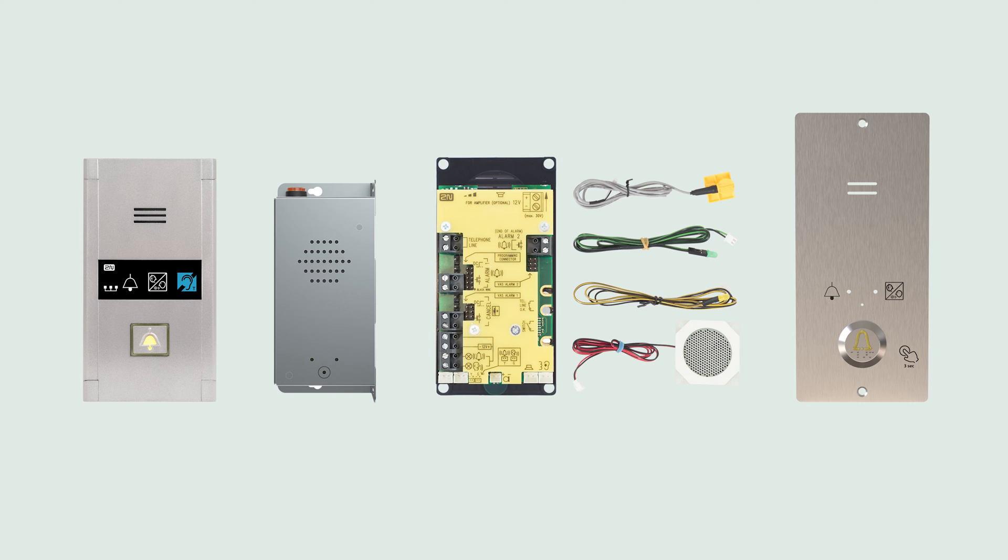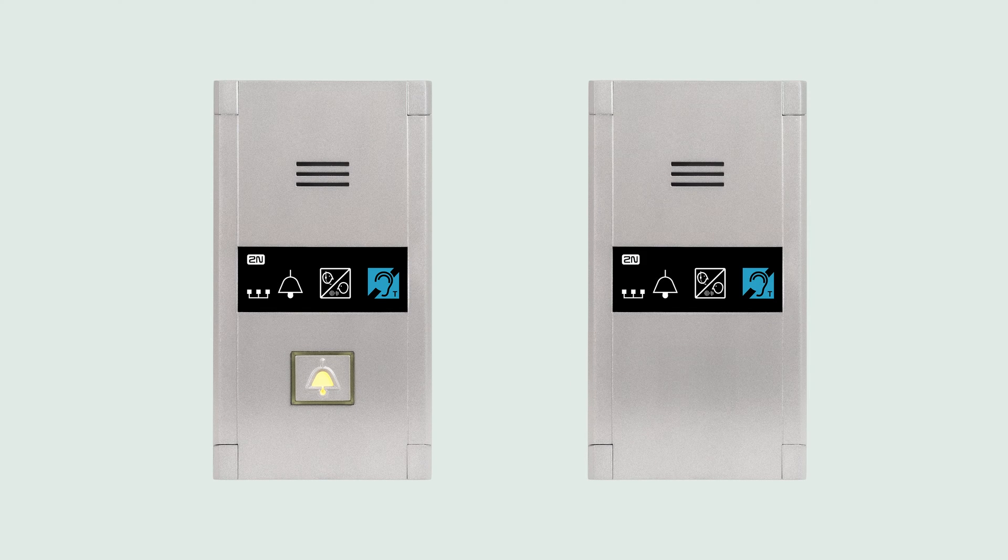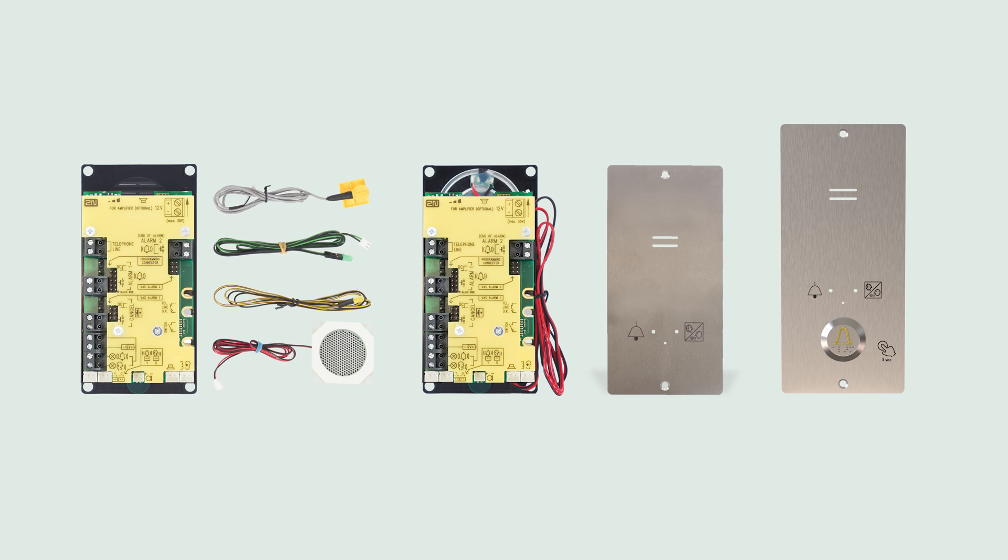There are several versions of the 2N LiftOne Communicator. First, there's the 2N LiftOne Compact unit, available with or without a button. Then, there's 2N LiftOne TOC unit, available with or without a voice alarm station. And finally, there are four variants of the 2N LiftOne COP unit.